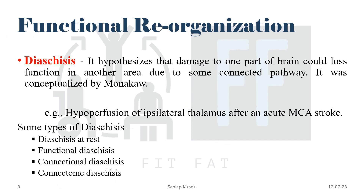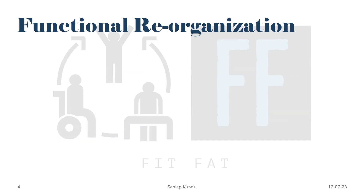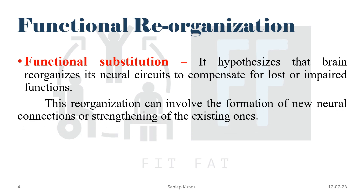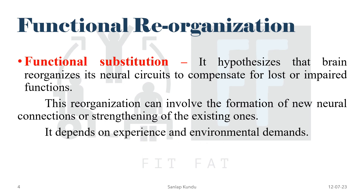The last option is functional substitution. This theory hypothesizes that the brain reorganizes its neural circuits to compensate for lost or impaired functions. This reorganization can involve the formation of new neural connections or the strengthening of existing ones, and it depends on experience and environmental demands.